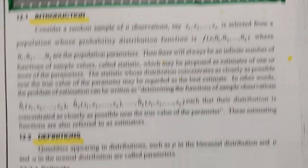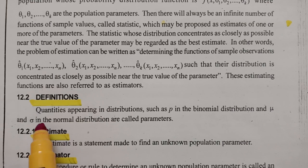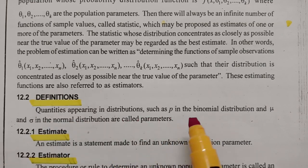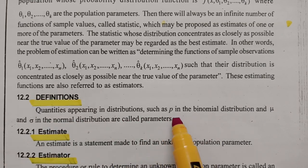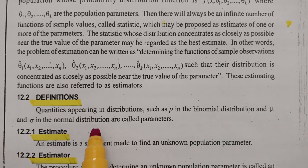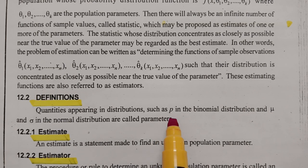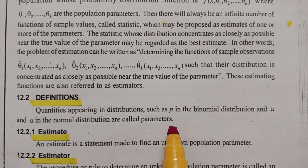Coming to our formal definitions, the first is parameter. The quantities appearing in the distribution — such as P in the binomial distribution, and Mu and Sigma in the normal distribution — are called the parameters. So P, Q, Sigma, and Mu are all parameters which are used in statistics for estimation.